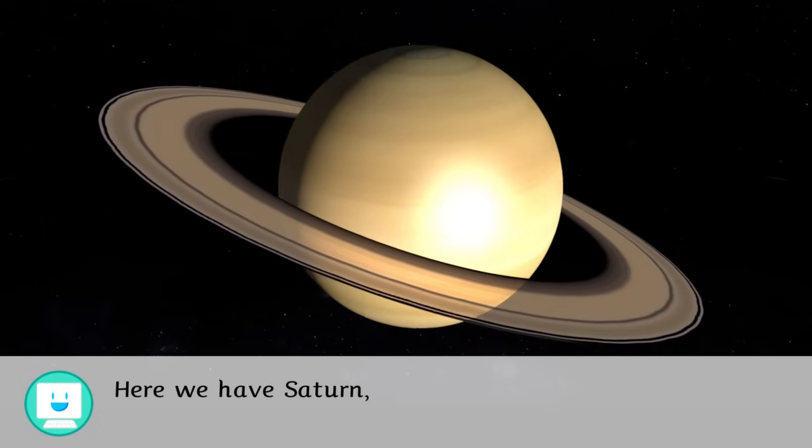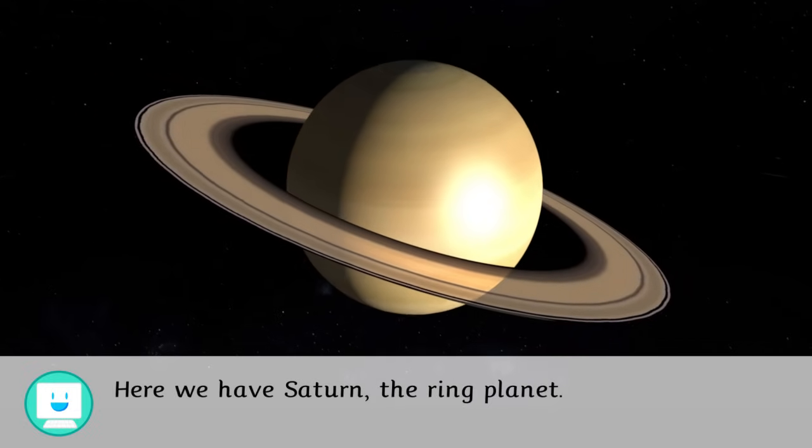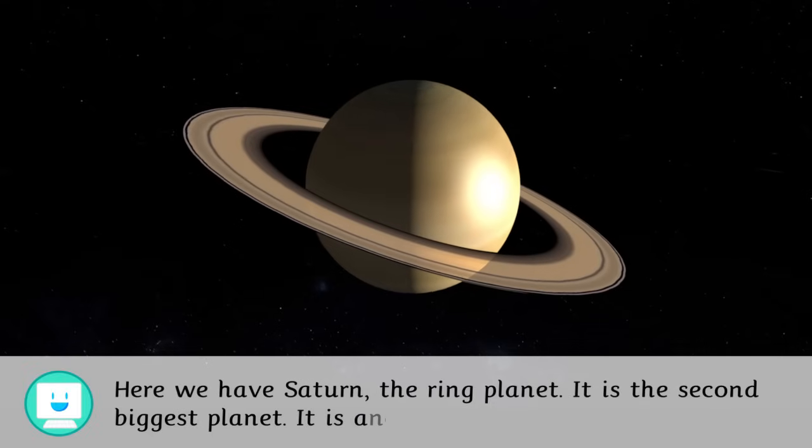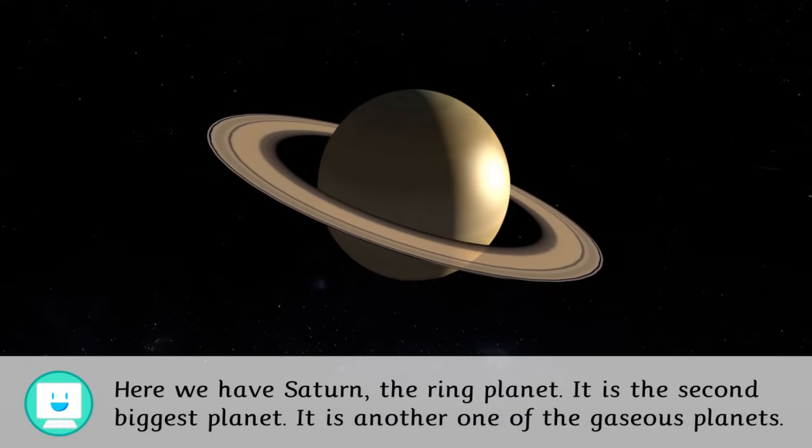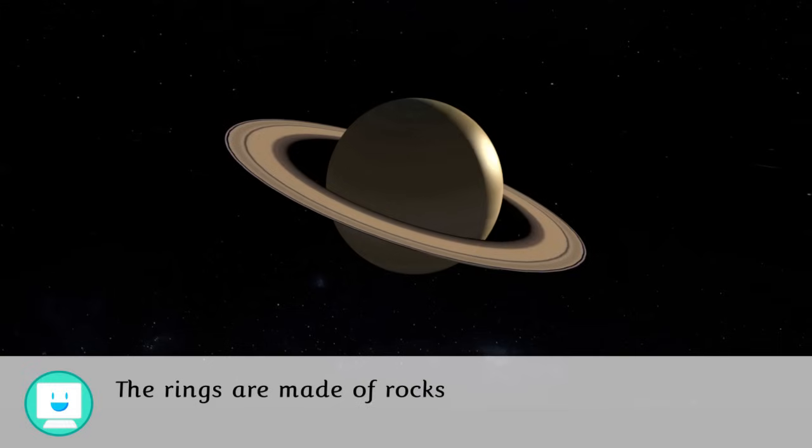Here we have Saturn, the ring planet. It is the second biggest planet. It is another one of the gaseous planets. The rings are made up of rocks and asteroids.